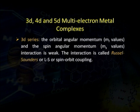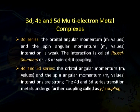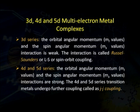For the 3d series, the orbital angular momenta ML and spin angular momenta MS interaction is weak. This type of interaction is called Russell-Saunders, LS, or spin-orbit coupling. Whereas for the 4d and 5d series, the ML and MS interactions are very strong. The 4d and 5d series transition metals undergo further coupling called JJ coupling, because their ML and MS values individually interact to give individual J values, and these individual J values couple with each other to give JJ coupling.